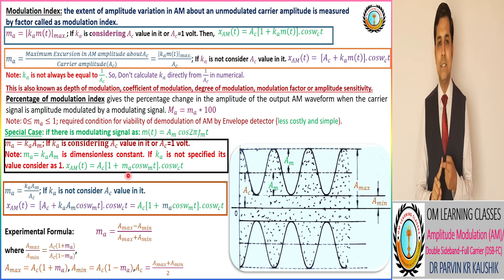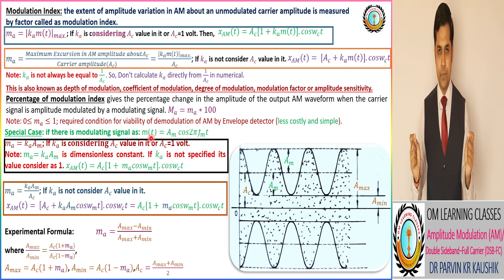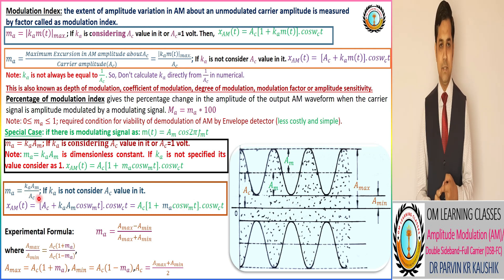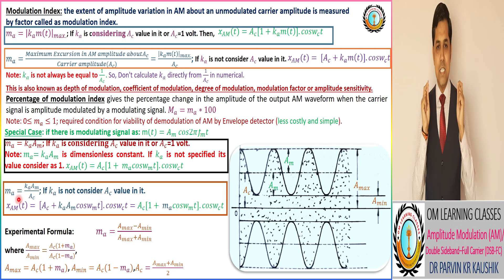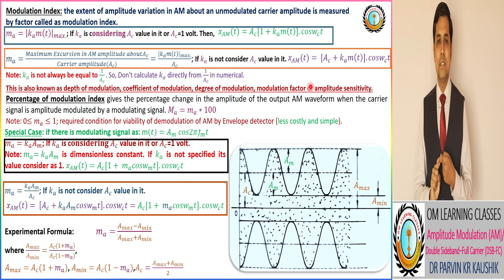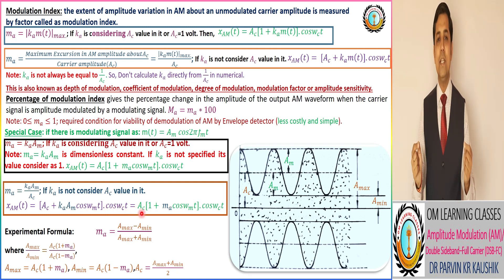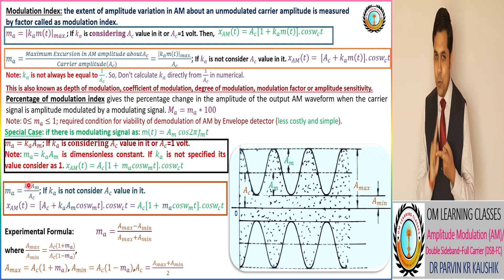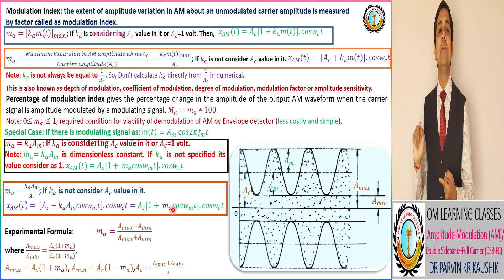For the same modulating signal m(t) = Am·cos(2π·f·t), the second representation of modulation index is the ratio of the maximum value of Ka·Am to the amplitude of the carrier AC. The modulated AM wave is: (AC + Ka·Am·cos(2π·f·t)) × cos(ωc·t), which simplifies to: (AC + MA·cos(ωm·t)) × cos(ωc·t), where MA = Ka·Am / AC.